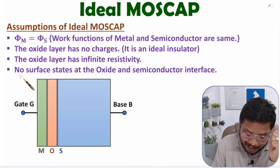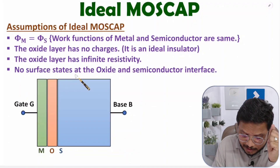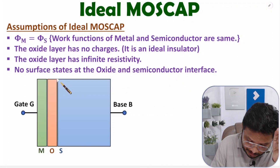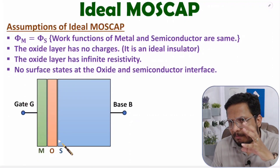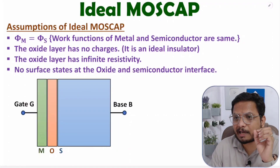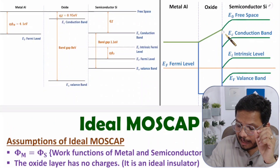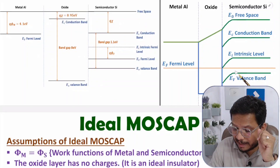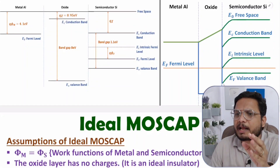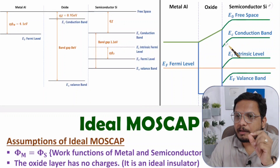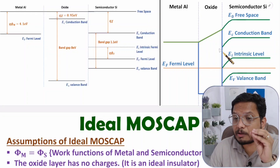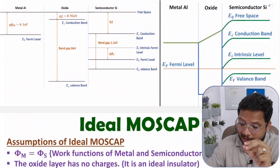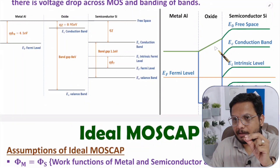The fourth assumption is based on the junction. It states that there are no surface states at the oxide and semiconductor interface — no surface states at the junction of SiO2 and semiconductor. In the practical MOS cap, I explained that there will be bending of the energy band — EC, EI, and EV — because of surface states at the junction. But in ideal MOS cap, there are no surface states, so in the energy band diagram there will be no bending.